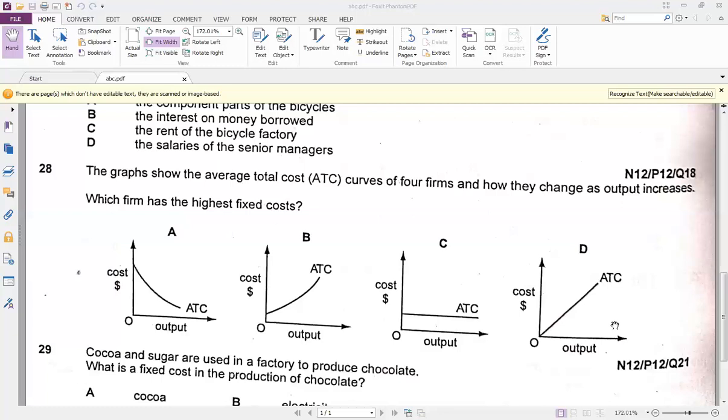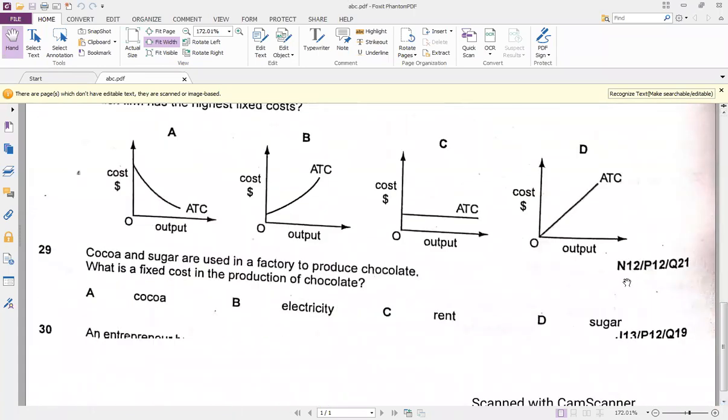Last question is 29. Cocoa and sugar are used in a factory to produce chocolates. What is the fixed cost in production of chocolates? So rent, option C, is there for us this time.